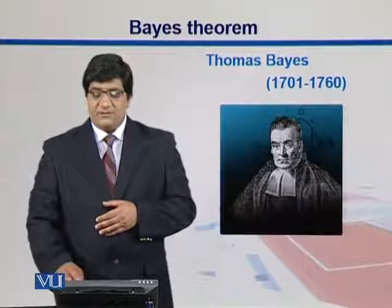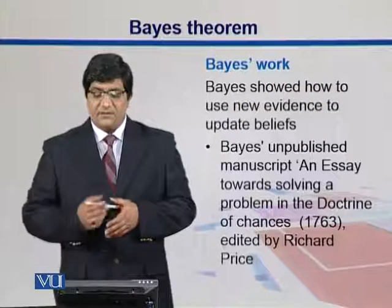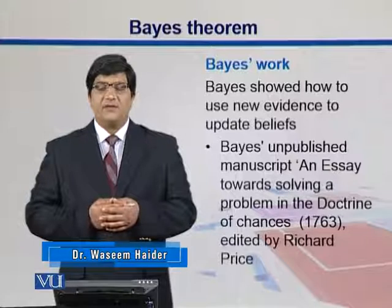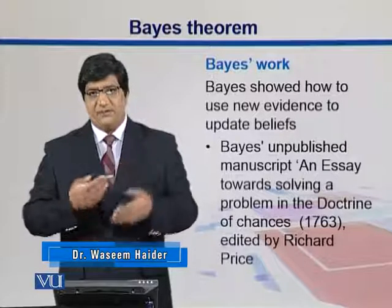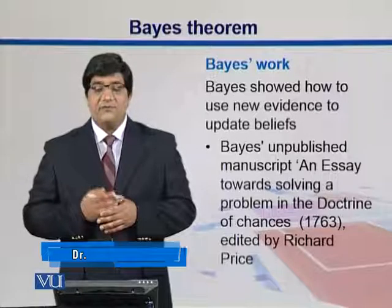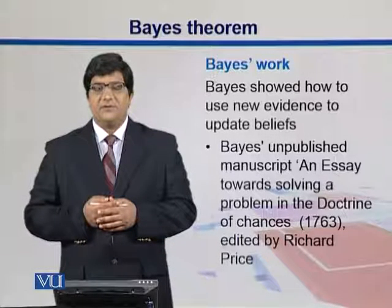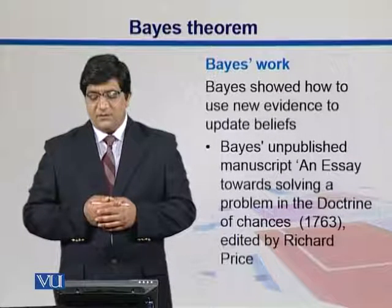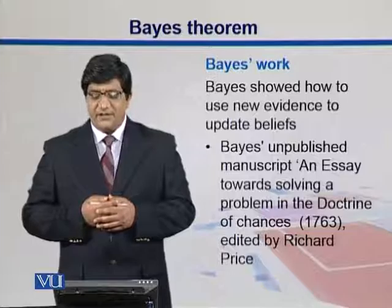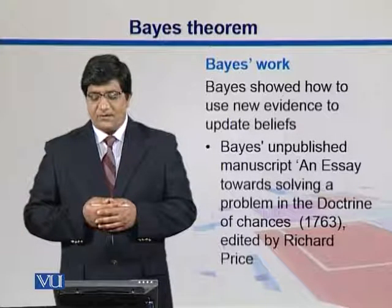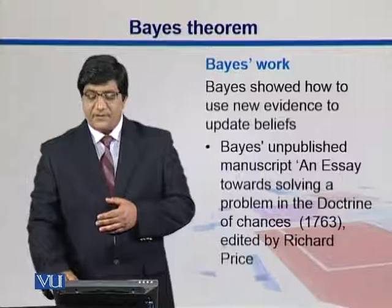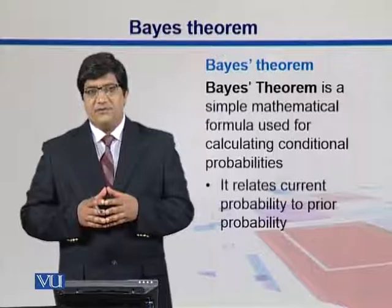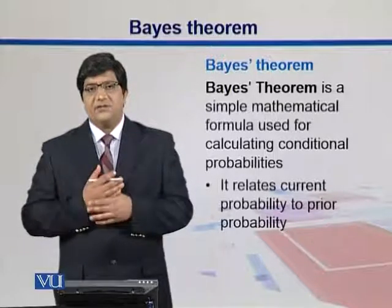This is the picture of Thomas Bayes. Bayes showed how to use new evidence to update beliefs. He was working on faiths and beliefs and wrote a manuscript which he did not present for publication, though that work was later restored by Richard Price. The manuscript was titled 'An Essay Towards Solving a Problem in the Doctrine of Chances,' where he gave relations now used to find conditional probabilities.